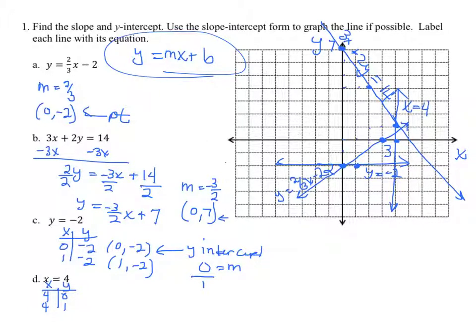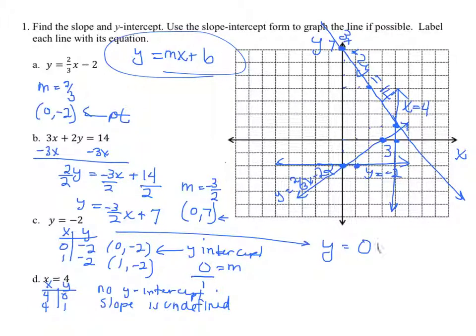Now, there's no y-intercept. So we can't use anything with the slope-intercept form for vertical lines. For horizontal lines, the one in C, you could actually write this as y is equal to 0x minus 2. And then you could see that the slope is 0, the y-intercept is negative 2.